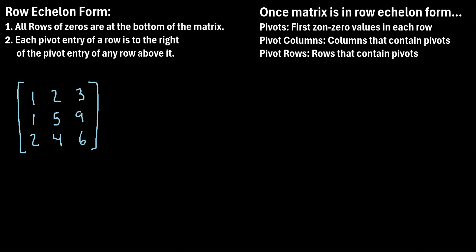Let's check out an example. Let's say we have this matrix right here, and we want to find the pivots, the pivot columns, and the pivot rows. Before we do that, we have to convert this matrix to row echelon form. In the first row, in this very first position, ideally this will be a non-zero value — it's a one, so that's good. But we need all of the values below it to be zeros. To make this one and this two a zero, notice that if we do row two minus row one, we would get one minus one, and this would become a zero.